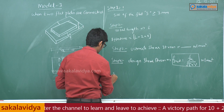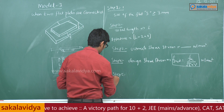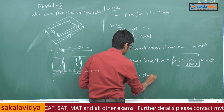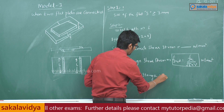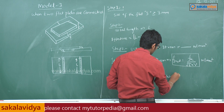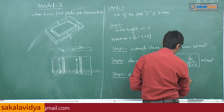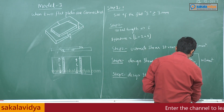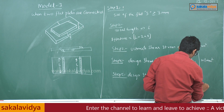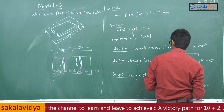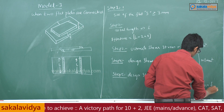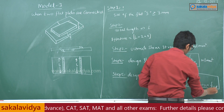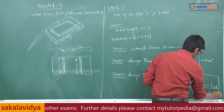Step 5: design strength in the weld. That is P_D is equal to 0.7 into size of the weld into effective length into design shear stress, that is F_wd. This is the design strength in the weld, with units of kilonewtons or newtons.